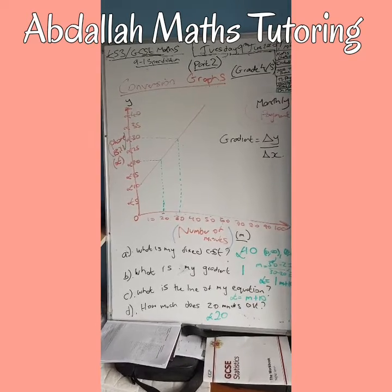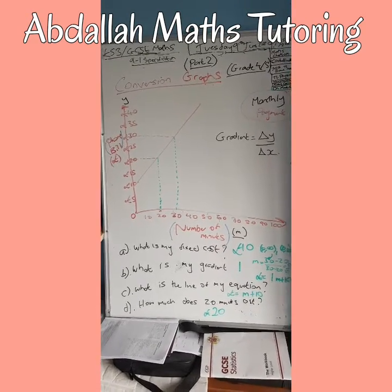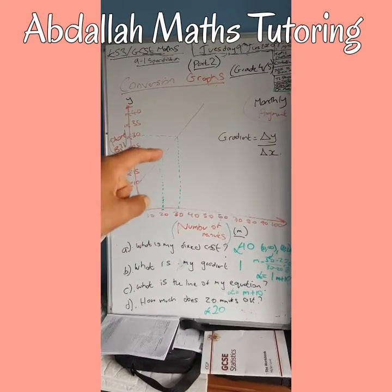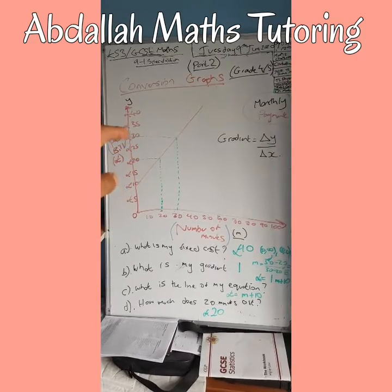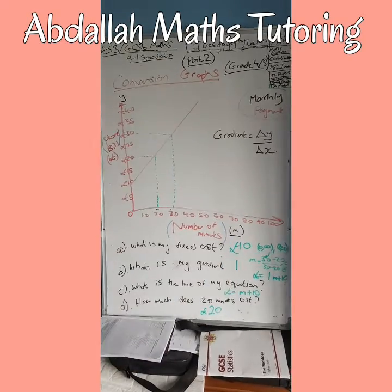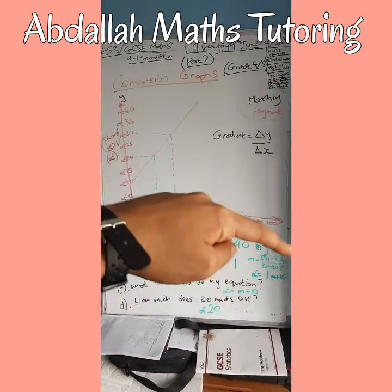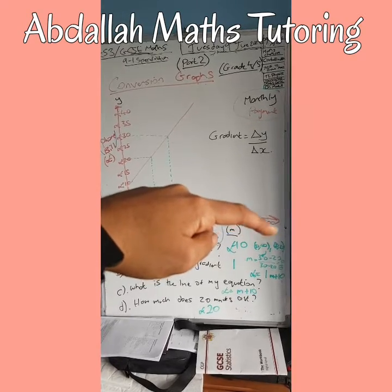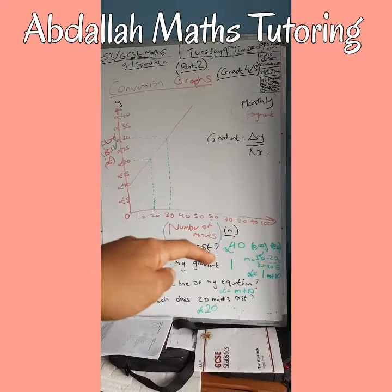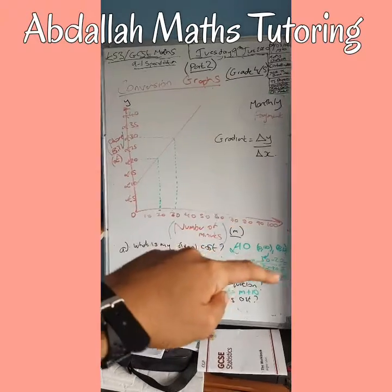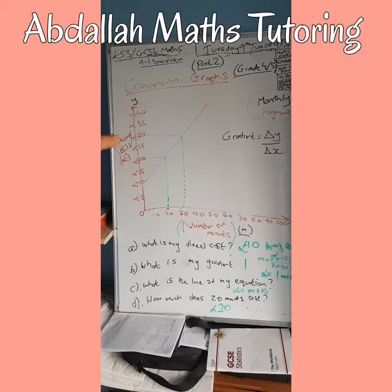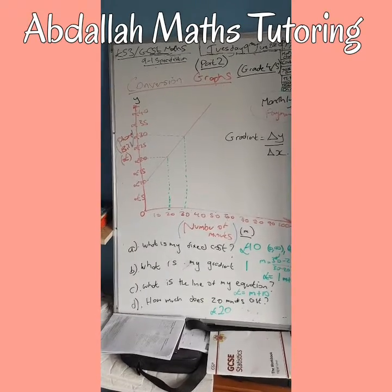Part B: what is the gradient? To work out the gradient it's the change in y divided by the change in x, so we use a little triangle. I've picked the corners at (20, 20) and (30, 30), so it's (30 − 20) divided by (30 − 20), which is 10 divided by 10, giving an answer of 1. So 30 minutes costs £30 and 20 minutes costs £20.